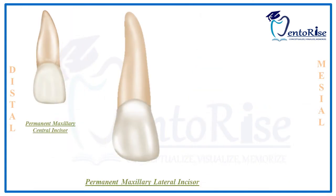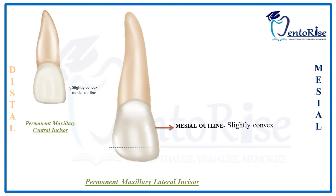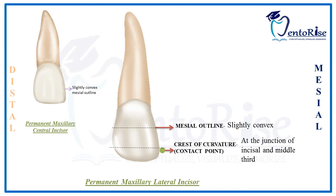The crown surface of a permanent maxillary lateral incisor is convex, and this convexity is more than that present on the permanent maxillary central incisor. The mesiodistal outline for a permanent maxillary lateral incisor is also convex, and more so compared to the central incisor. The crest of curvature or contact point for a lateral incisor is observed at the junction of the incisal and middle third — this was the contact point on the distal outline of the permanent maxillary central incisor. The distal contact point of the central incisor is the mesial contact point for the lateral incisor.